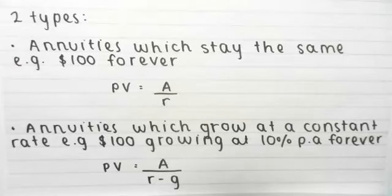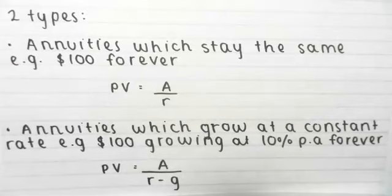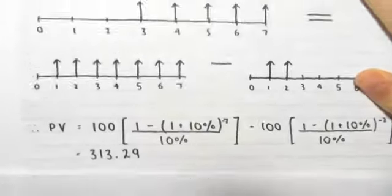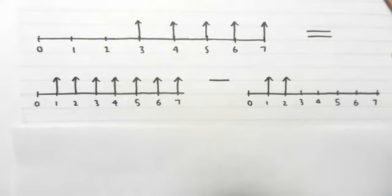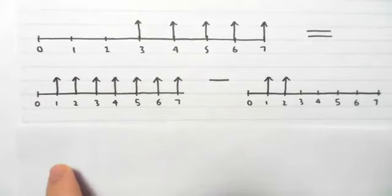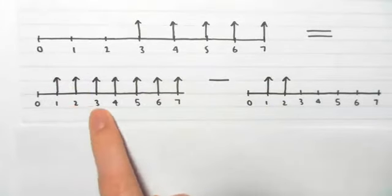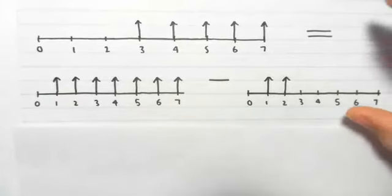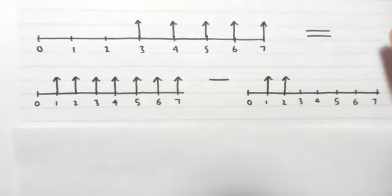If these cash flows don't start in year one — say they start in year three but continue forever — that's a deferred perpetual annuity. For this, Method 2 is the simplest approach. You calculate the perpetuity value using A/R or A/(R-G) starting from year one, then subtract the periods by which it has been deferred.